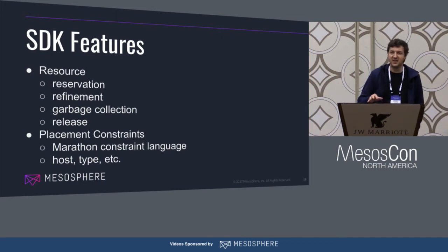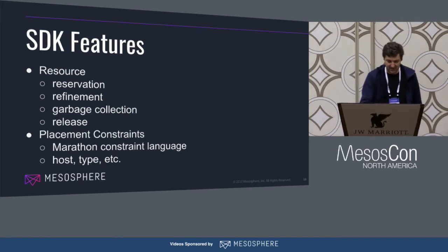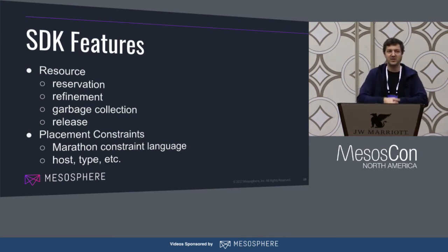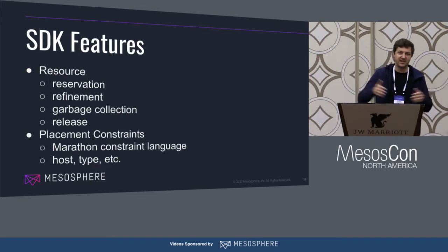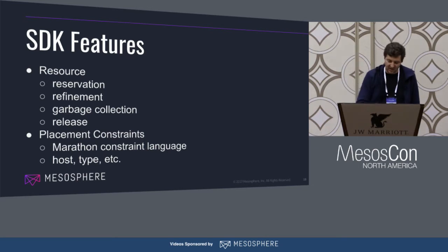Is anybody familiar with reservation refinement? It's a brand new feature in Mesos — we'll demo it later, it's pretty cool. We also have placement constraints. Have you used the Marathon placement constraint language? That's fully natively supported by the SDK, so every time you describe a pod or a task, you can apply those same placement constraints.